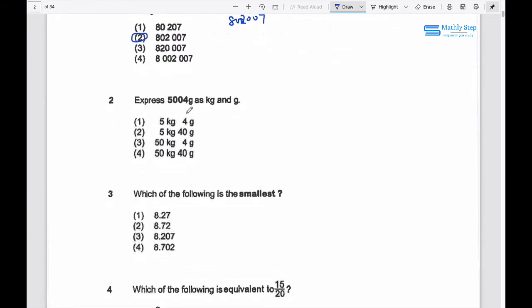Number 2: Express 5,004 grams as kg and g. So 5,000 grams equals 5 kg, and then 4 grams is 4 g. So it's 5 kg and 4 g. This is the correct answer.